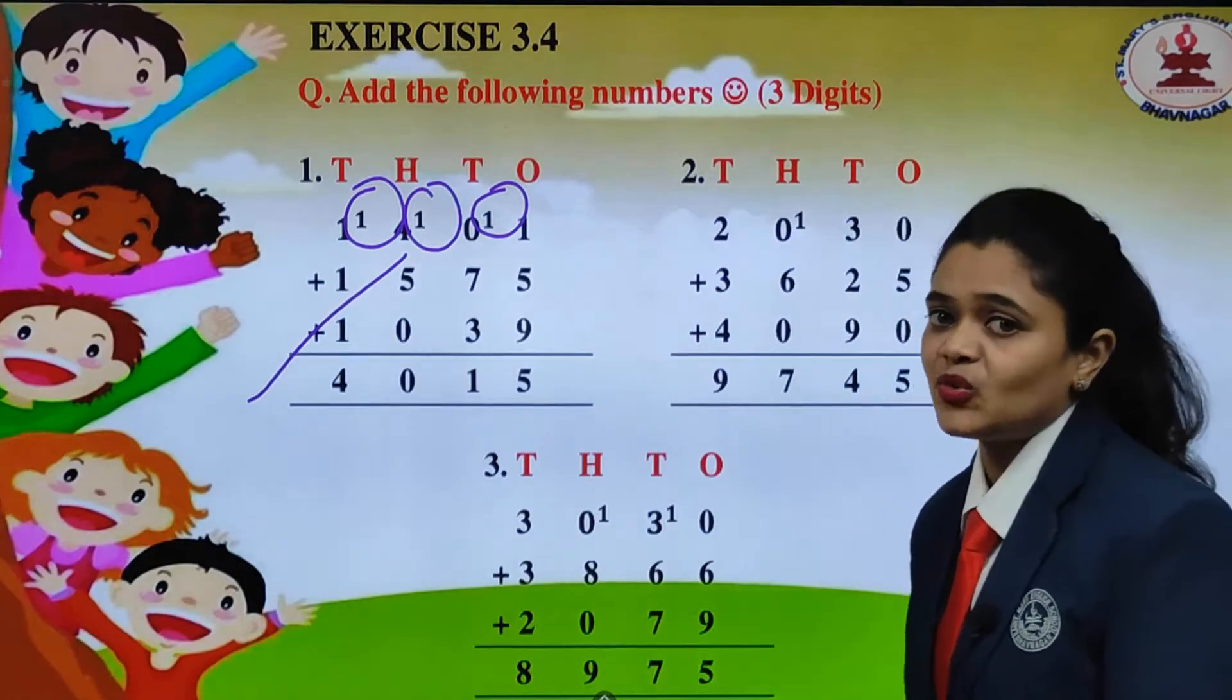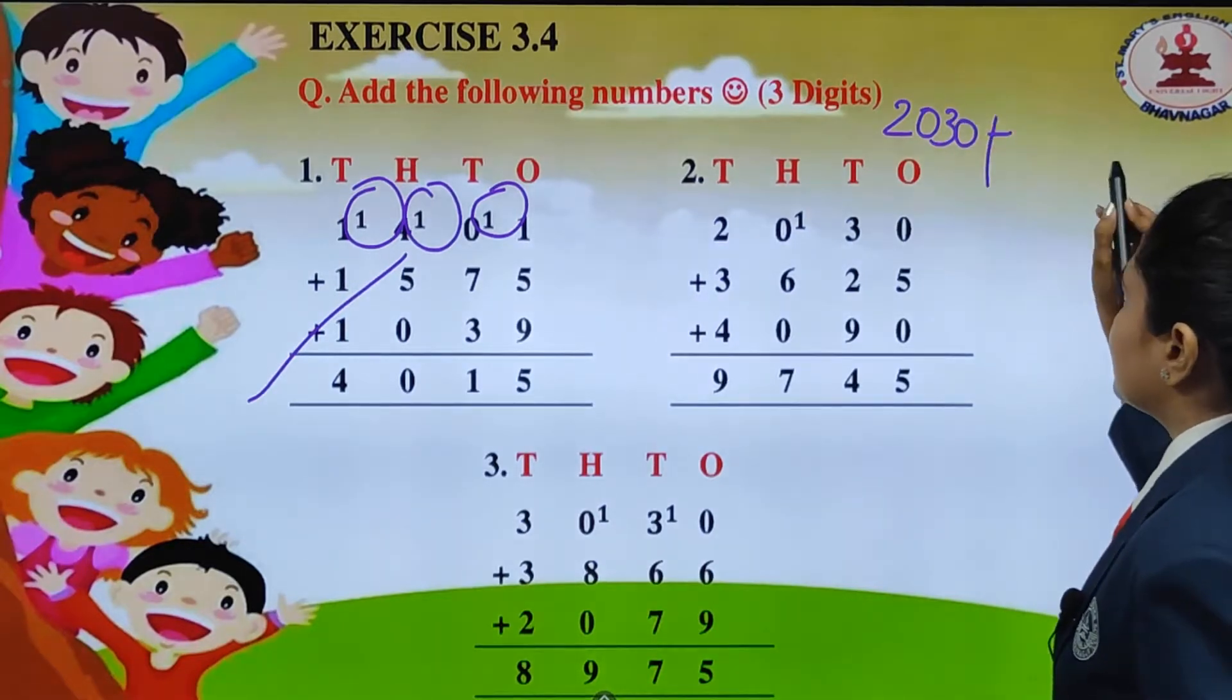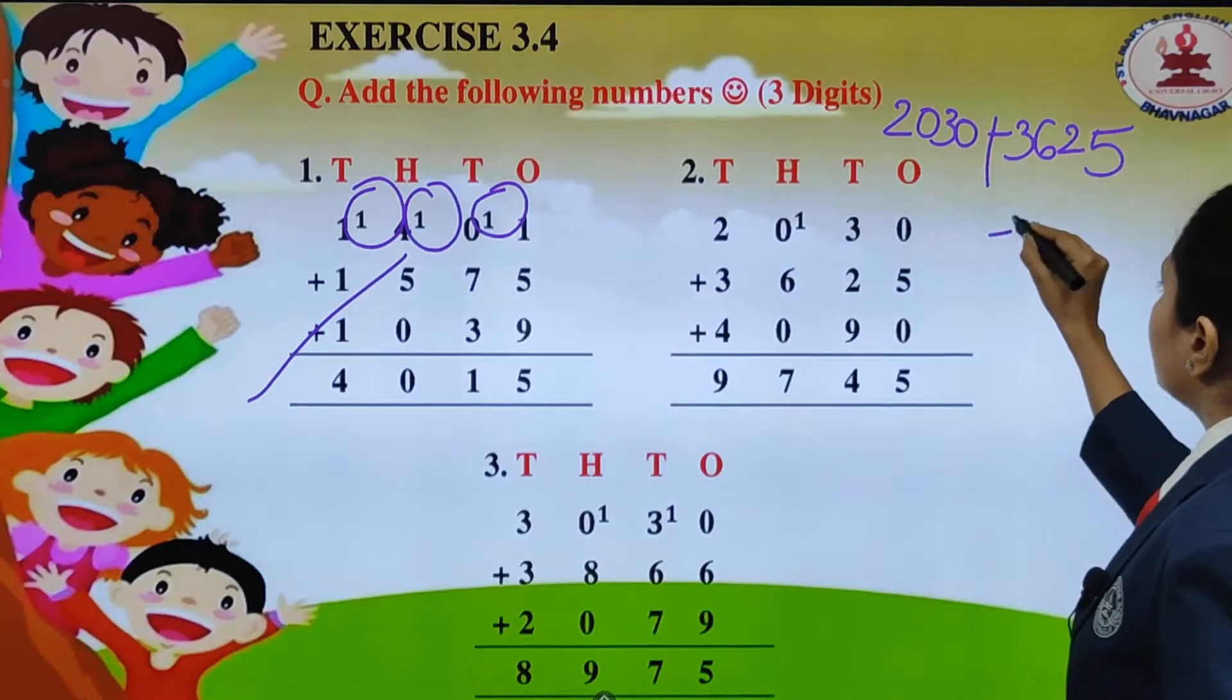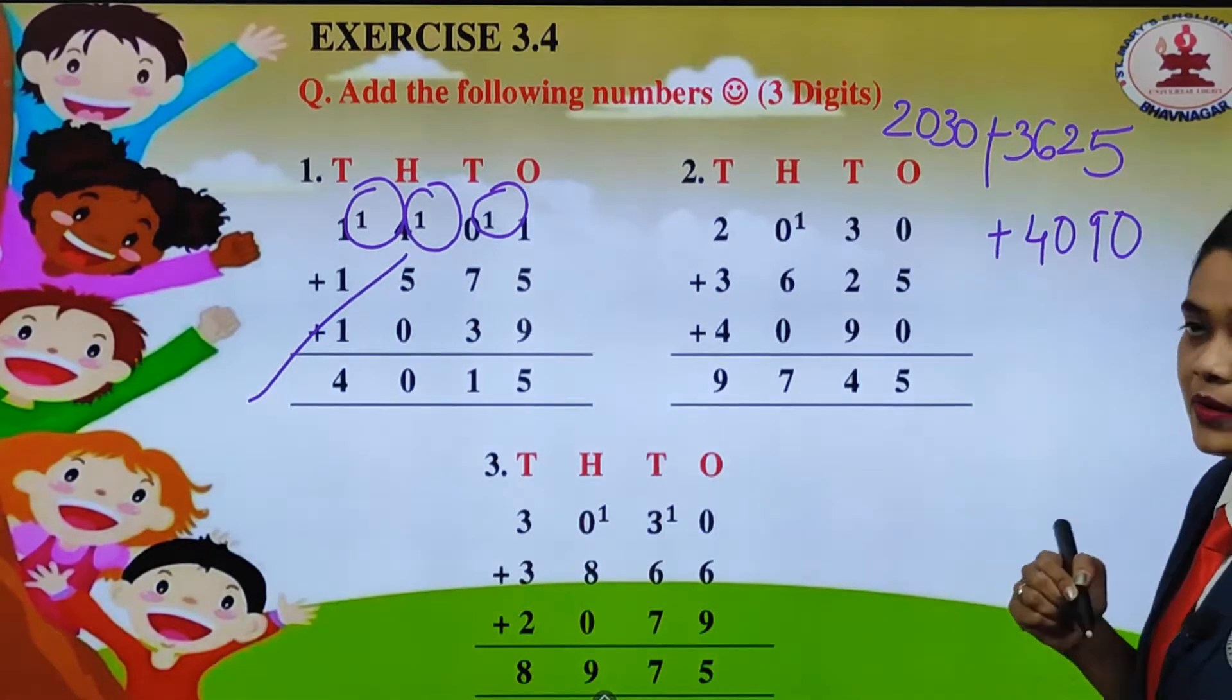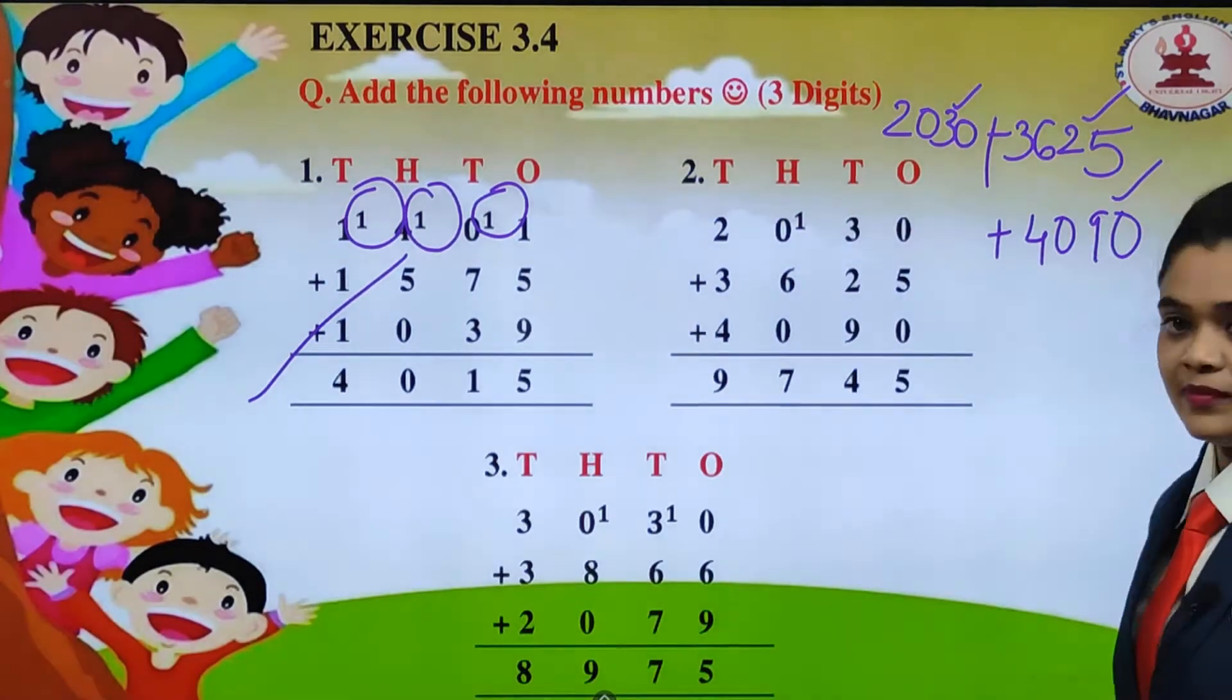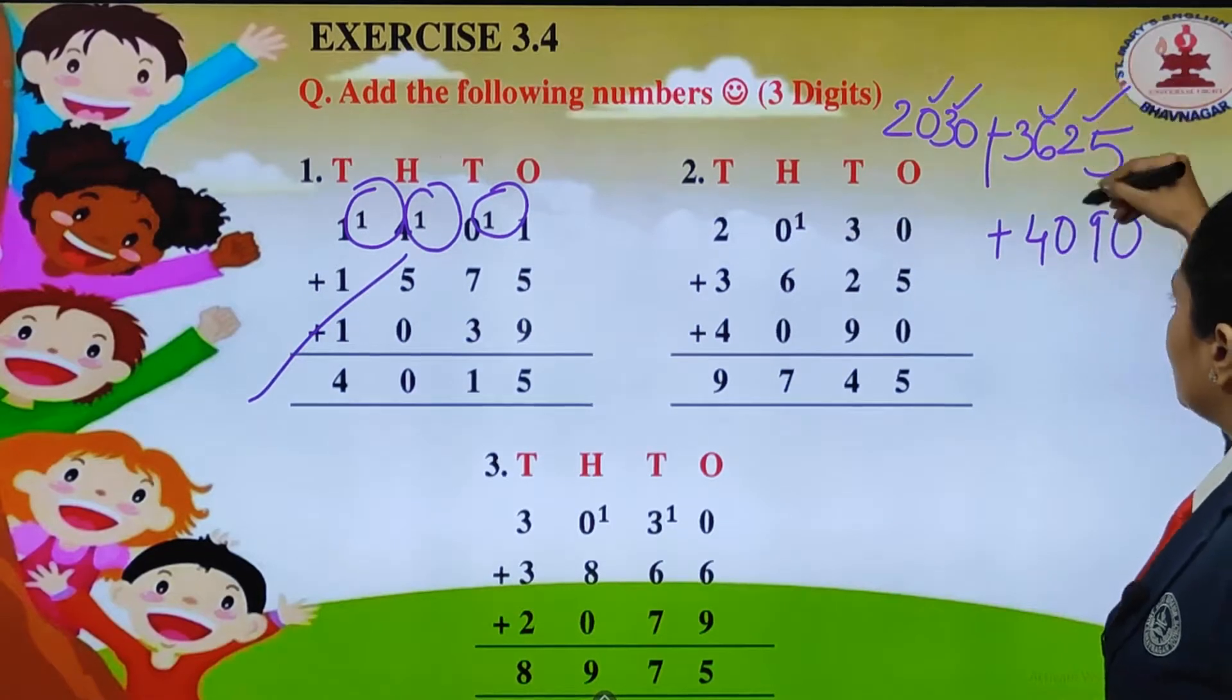Let us see the next one. Children over here we have 2030 plus 3625 plus 4090. Which are the numbers which will go under ones place value? 0, 5, 0. Which we have already placed. Then under tens place value 3, 2, 9.